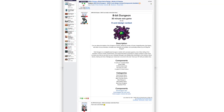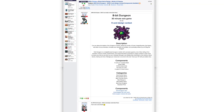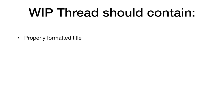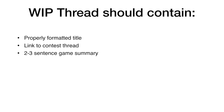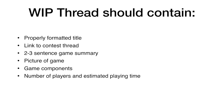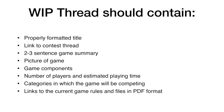Once you've ensured that your WIP thread post contains all of these components, then congratulations! You've taken your first step in successfully entering your game into a print and play game design contest on BGG. To sum it all up, your WIP thread should contain: a properly formatted title, a link to the contest thread, a two to three sentence game summary, a picture of your game, a listing of your game components, the number of players and the estimated playing time, the categories in which you want your game to compete, and links to the current game rules and files in PDF format.